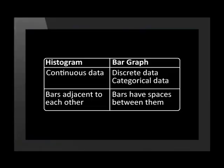Bar graphs are often confused with histograms. Let's look at the differences between the two. A histogram is used to display continuous data, which is data that can contain decimals. To show this, we put the bars next to each other. Bar graphs can display discrete and categorical data, which are whole numbers. Because of this, the bars are placed apart from each other.